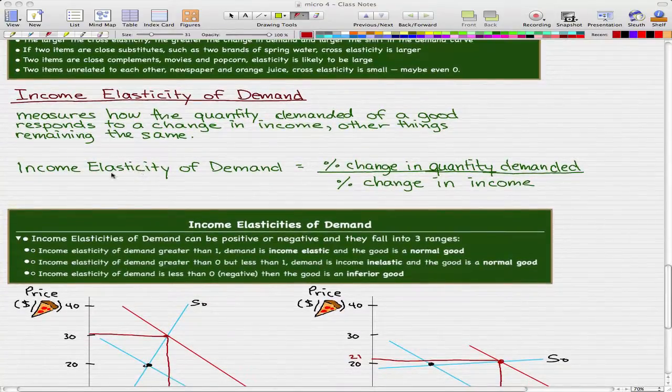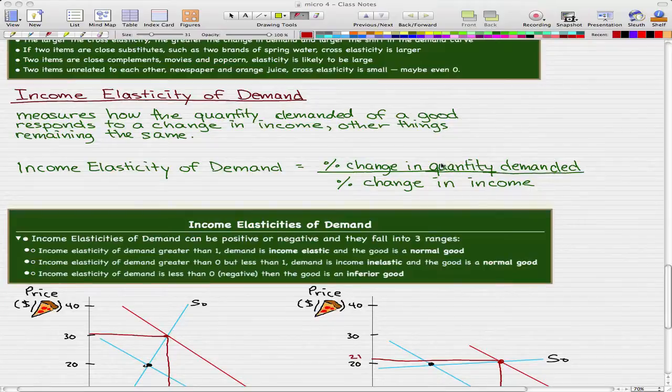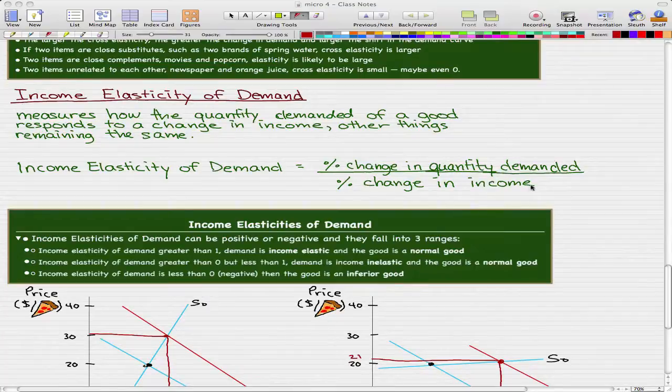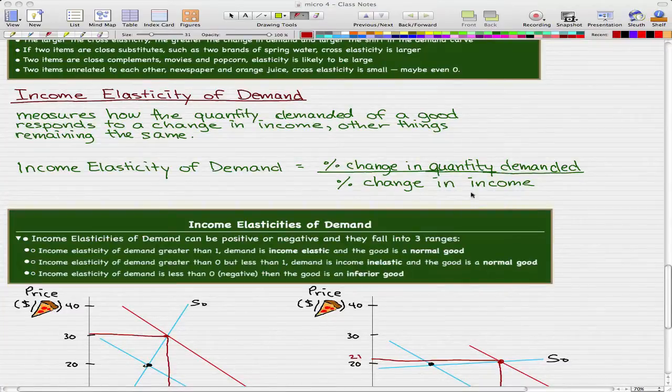And the formula for that is Income Elasticity of Demand equals the percentage change in quantity demanded over the percentage change in income. And this should look pretty familiar because all we changed is the denominator. Before the denominator was the percentage change in the price of a substitute or a complement, now it's the percentage change in income because we're dealing with income.